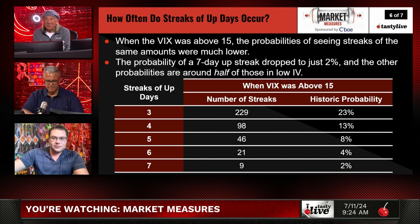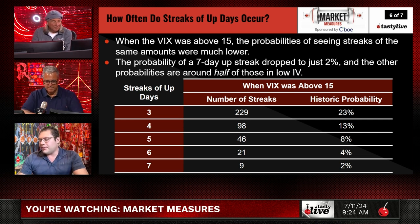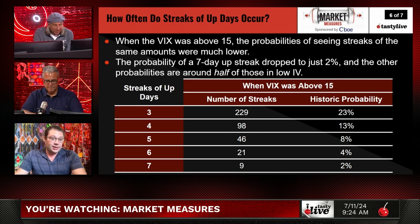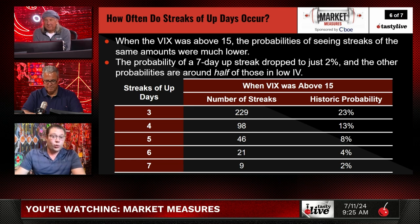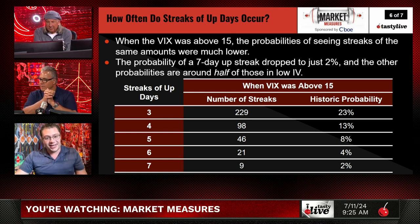When the VIX is above 15, the probability of seeing streaks of the same lengths is much lower. The probability of a seven-day upstreak dropped to just 2%, and the other probabilities were about half those of low IV. There were nine streaks with the VIX above 15 of seven straight up days. This actually lends to the reason why we like to trade in high IV — in high IV we like two-sided markets, and it's nice to know that when volatility is high, you don't see that many streaks. That's good if you're premium selling, because you don't want the streaks. When you have fewer streaks and more premium, that's another reason why we like trading in high IV.